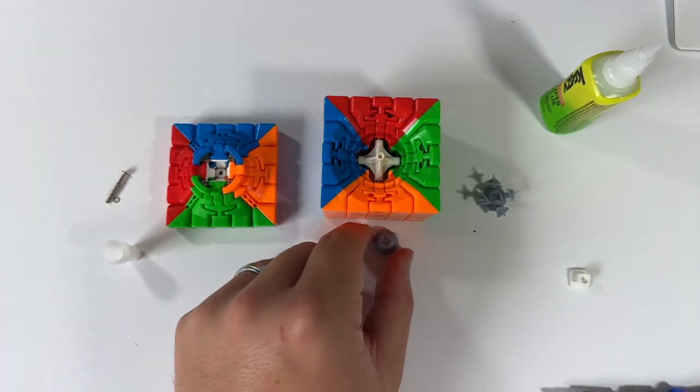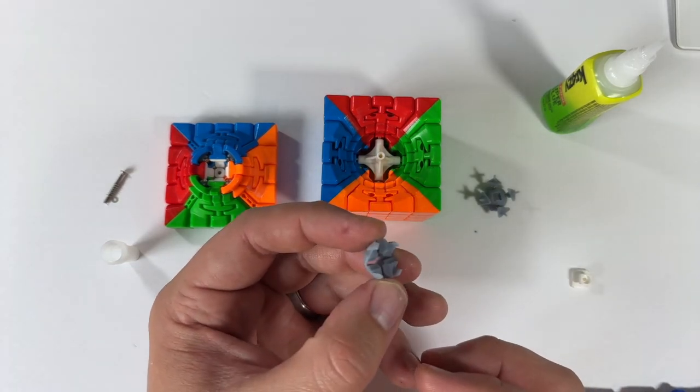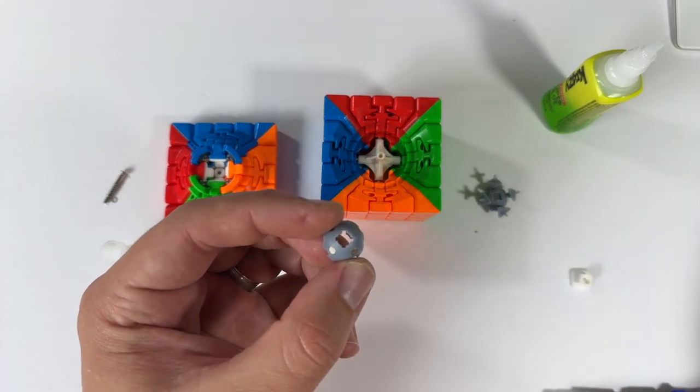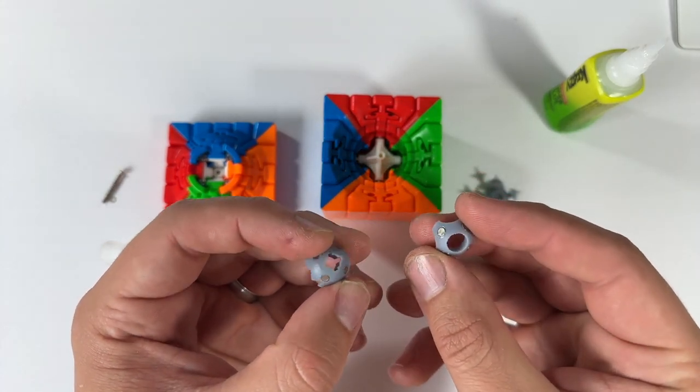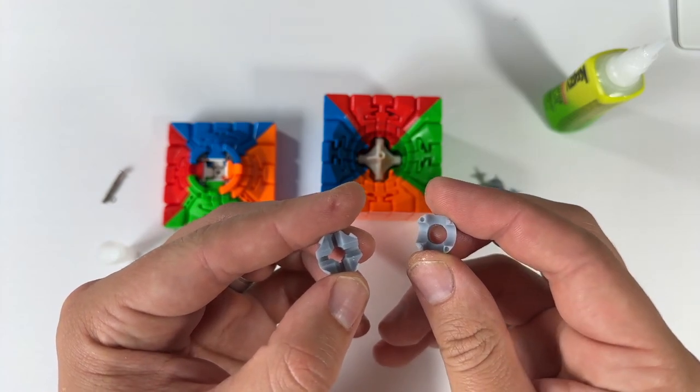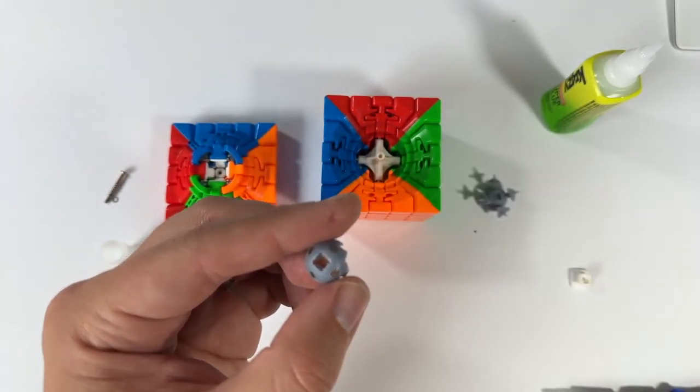There are different cores for different 5x5 cube models. These are two examples for the Moyu Ao Chuang 5x5 on the left and the YJ MGC 5x5 on the right. These cubes use different alignment methods to attach to the core and to their other half.